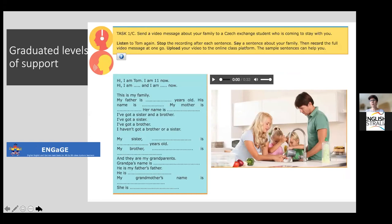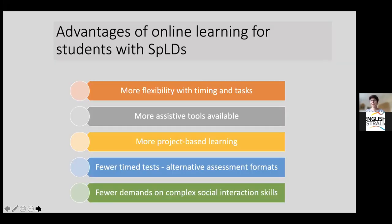Another important aspect of universal design is a graduated level of support, particularly for productive skills like writing and speaking. Within one task you can provide differentiated scaffolding: students who are struggling can use a written frame or a listening text, while students who don't need it can complete the task autonomously without support. This graduated approach is important to consider when designing tasks.